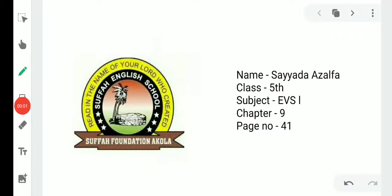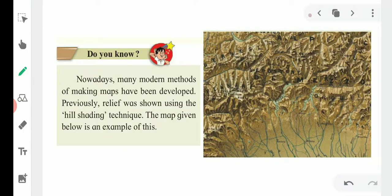Assalamu alaikum students. Today I am continuing your chapter number 9, page number 41. Do you know, nowadays many modern methods of making maps have been developed. Previously, relief was shown using the hill shading technique. The map given below is an example of this. As you can see, the picture here shows one type of map which is hill shading.